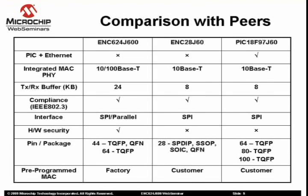These integrated hardware features enable secure data transmissions with reduced code size, faster communication establishment and throughput, and reduced firmware development efforts. Each ENC624J600 controller has a unique factory pre-programmed Ethernet MAC address, which is required for every Ethernet device. This simplifies the design and manufacturing process by eliminating the cost of buying an Organizationally Unique Identifier (OUI) from the IEEE and the time required to perform serialized MAC address programming during manufacturing.